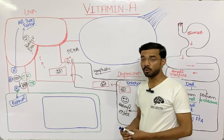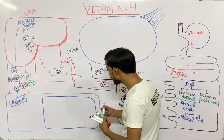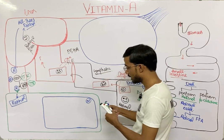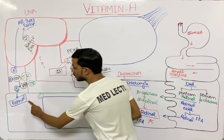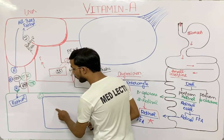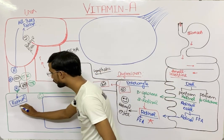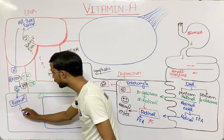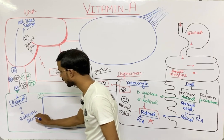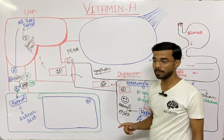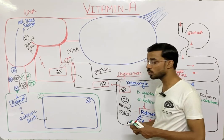Inside the tissue cells, retinol is present in the cytoplasm. The cell has a nucleus surrounded by cytoplasm. The retinol must be transported into the nucleus, so in the cytoplasm it converts into retinoic acid, which then enters the nucleus.